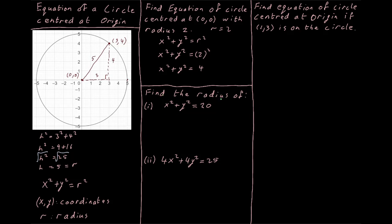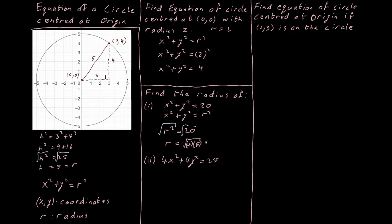Now we need to find the radius of x squared plus y squared equals 20. This looks like the equation of a circle centered at the origin, so x squared plus y squared equals r squared, meaning r squared equals 20. We take the square root of both sides to find the radius. We can break this up as the square root of 4 times 5, which is the square root of 4 times the square root of 5, which is 2 root 5. So the radius of that circle is 2√5.